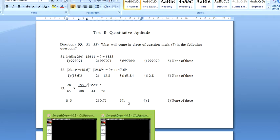The first question I will take is 3463 into 295 minus 18611 is equal to question mark plus 583.